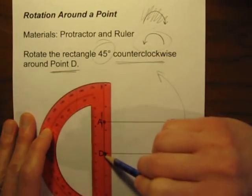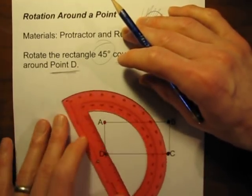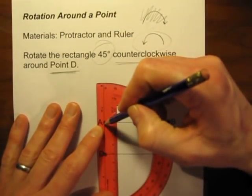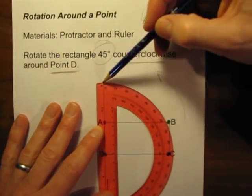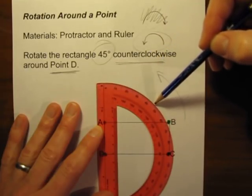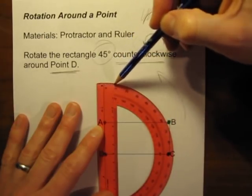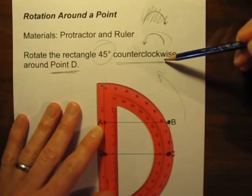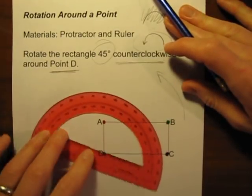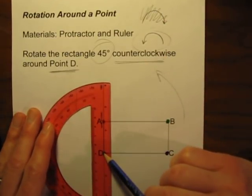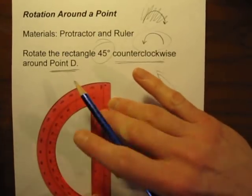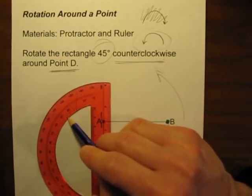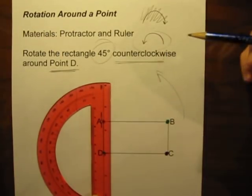This is another place students get confused: should you line it up with point A this way, or the other way? If we line it up one way and go over 45 degrees, we'd be going clockwise — which is not the direction we're supposed to rotate in this problem. So let's try it the other way: still with the center at point D, lining up with point A going the other way, and this time using the inside numbers of the protractor. Going counterclockwise — that's the correct way to line it up.